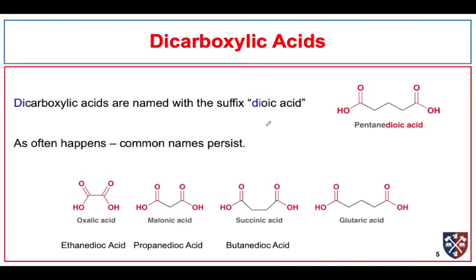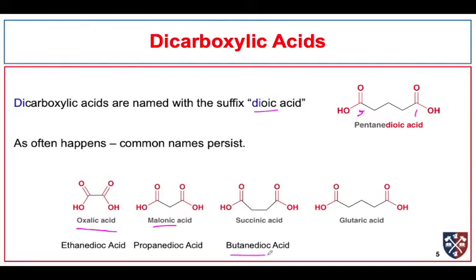For dicarboxylic acids, we use the 'dioic acid' ending. Here's an example of pentanedioic acid — notice there are only two positions where the acid could be, at the one position and the five position. Again we see common names: ethanedioic acid is oxalic acid, propanedioic acid is malonic acid — a particularly interesting compound we'll use often when we talk about the chemistry of the alpha carbon. Succinic acid has the IUPAC name butanedioic acid. Glutaric acid is pentanedioic acid.